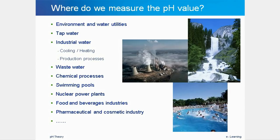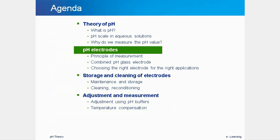There are several industry areas where pH measurements are important. For example, in environmental and water utilities for determination of the pH value of streams and rivers and for quality control of tap water. Also for industrial wastewater which will be released back into the environment, it is important to know the pH value. Now that we know how the pH value relates to the chemical composition of a solution and why it is important, we still need to find out how we can determine the pH value and with which instruments.